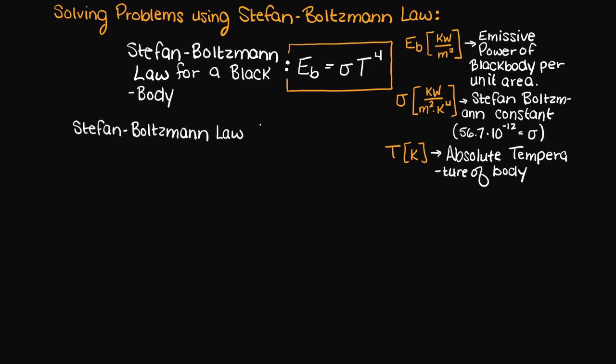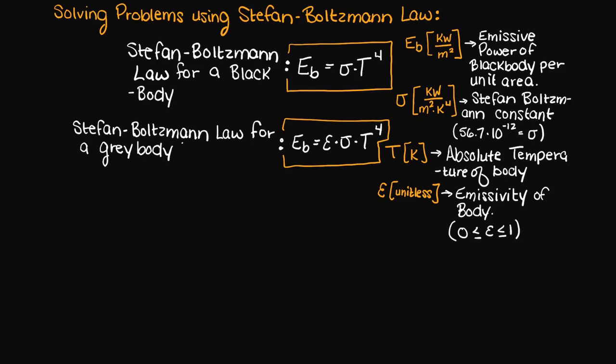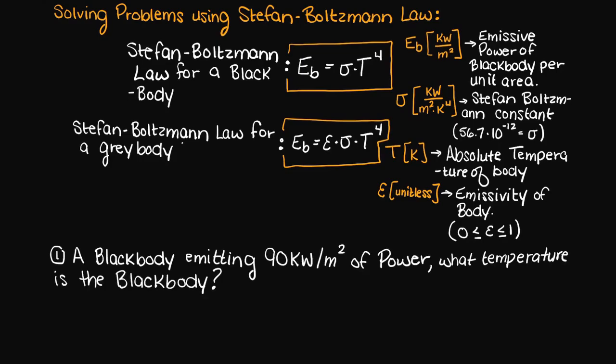Also, remember that since real bodies have an emissivity factor, we also have that term if our body doesn't absorb 100% of the incoming radiation. Alright, so let's take a look at our very first question, which states that we must find the temperature of a black body that is emitting 90 kW of power per m² of area.